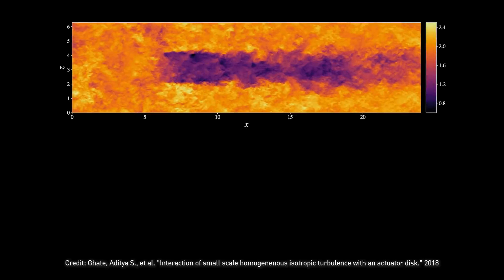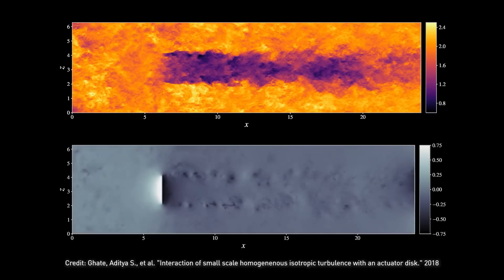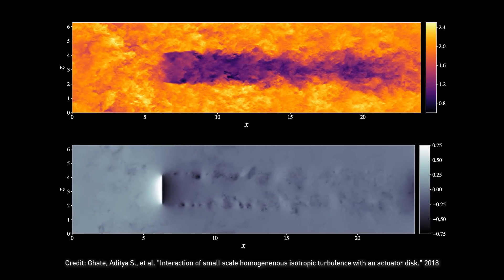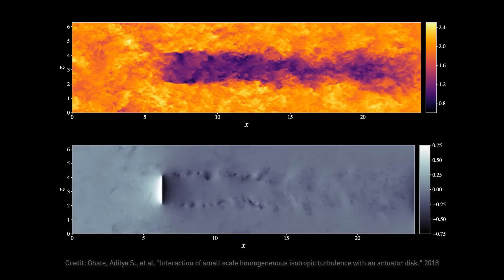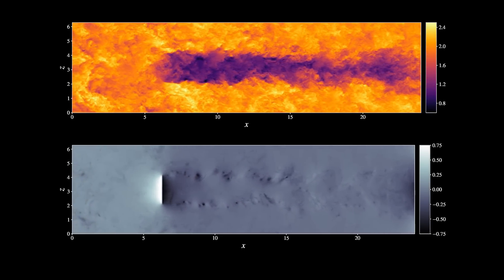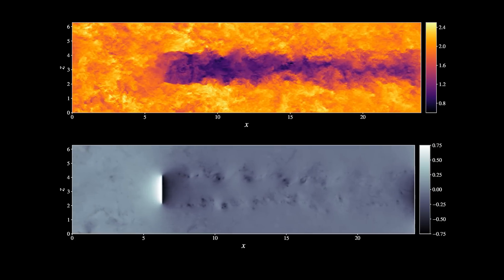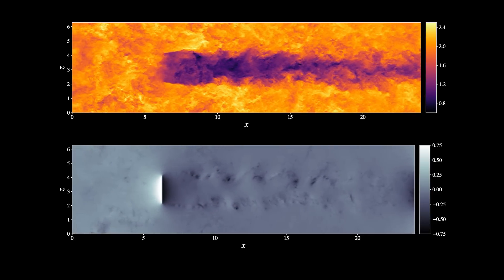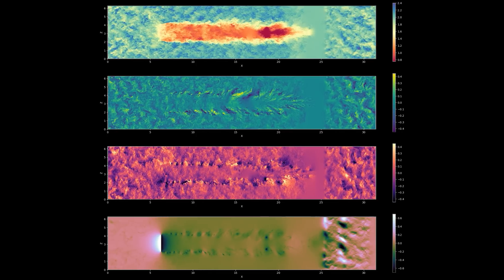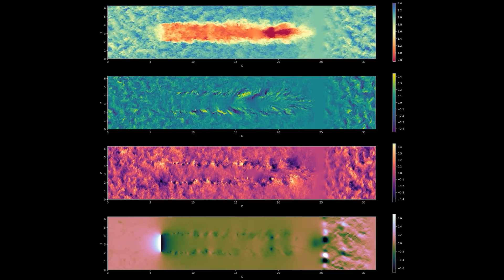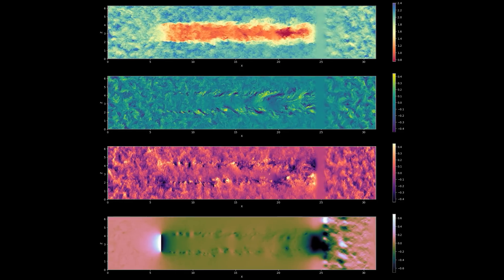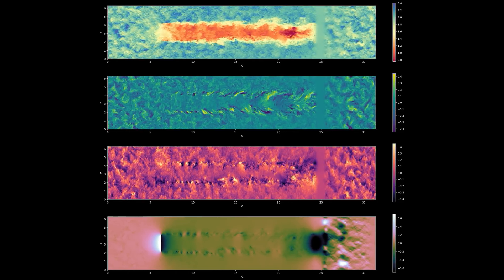The gold standard for generating this data is the large eddy simulation shown here. But to run just one iteration for a single turbine can take 40 days on a 100-core CPU. And with so many iterations needed to develop an accurate model for a specific site, using CPUs is impractical.